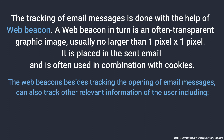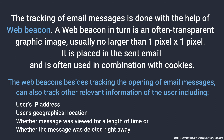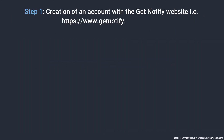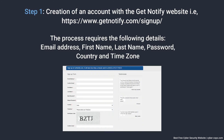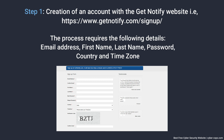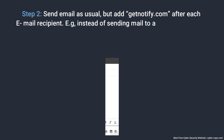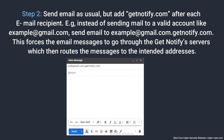The web beacon is placed in the sent email and is often used in combination with cookies. Besides tracking the opening of an email message, web beacons can also track other relevant information, including the user's IP address and geographical location, whether the message was viewed for a length of time, or whether the message was deleted right away. Step one of the process is creation of an account with the GetNotify website, requiring details like email address, first name, last name, password, country, and time zone.